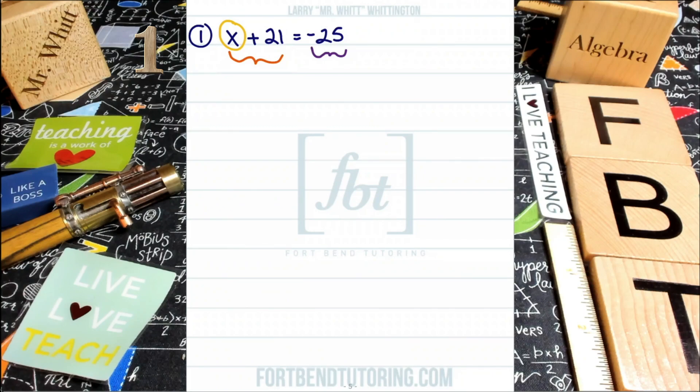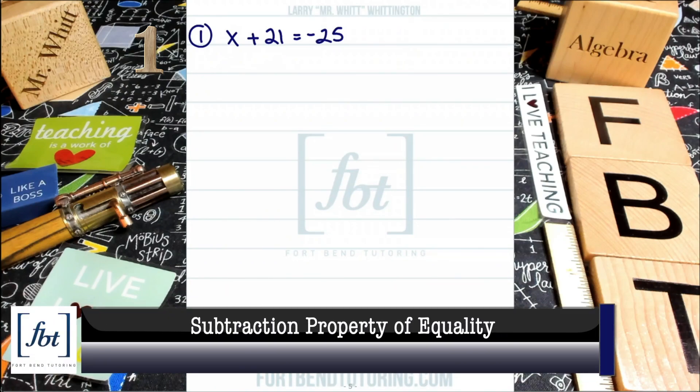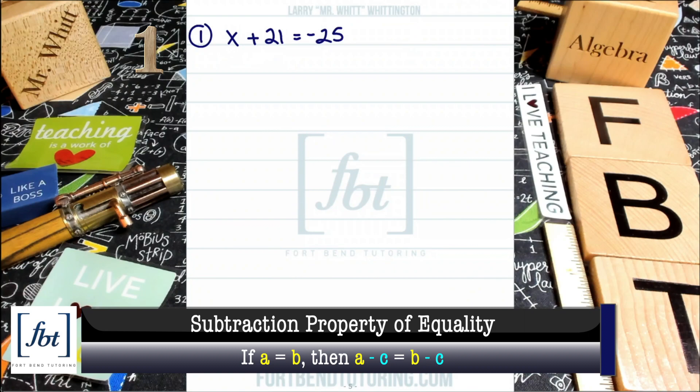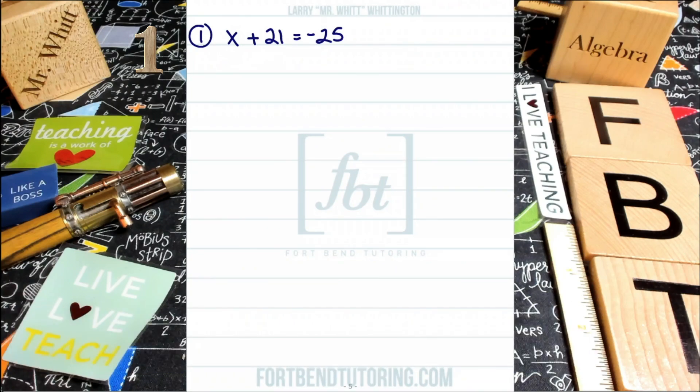So how do you go about getting rid of that positive 21 from the left side of the equation? Well, that's where the subtraction property of equality will serve us well. Because the 21 is positive, we want to use the opposite of that. In other words, because they're adding 21, we'll be subtracting 21 in order to isolate the variable X. And it'll look just like this.